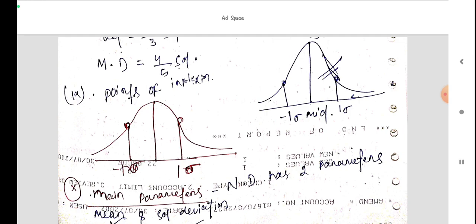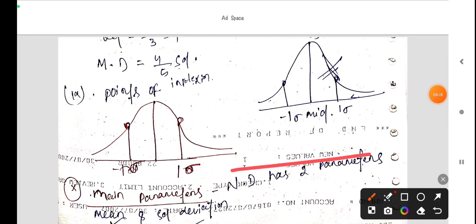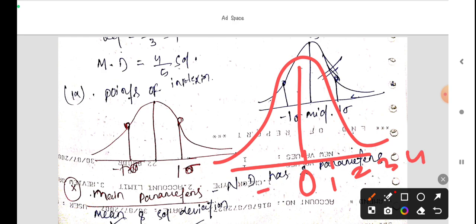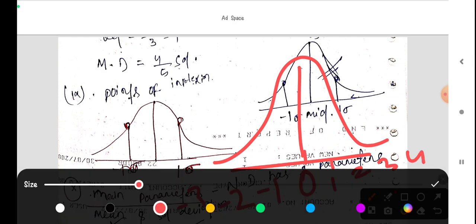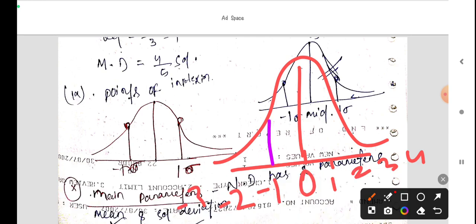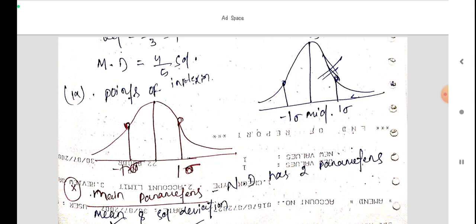1 sigma and minus 1 sigma. In the middle is zero. On this side is 1, 2, 3, 4, and on this side is minus 1, minus 2, minus 3. So this is minus 1, that means here, this is the inflection point. Here, this is the inflection point.